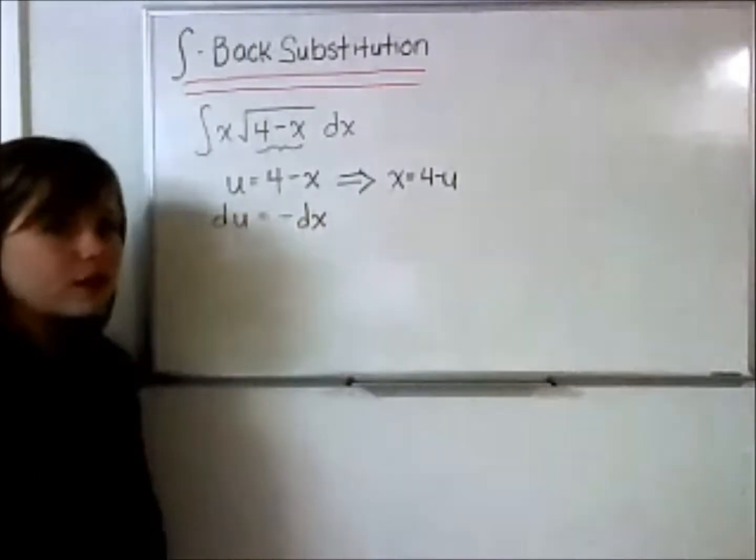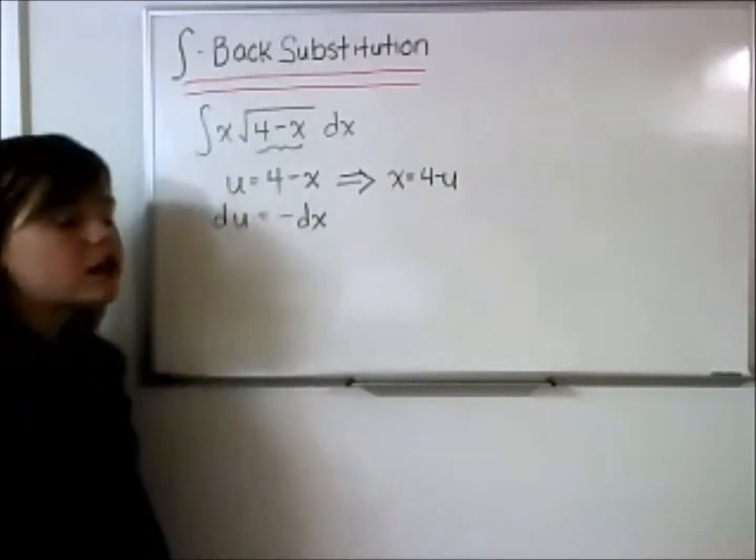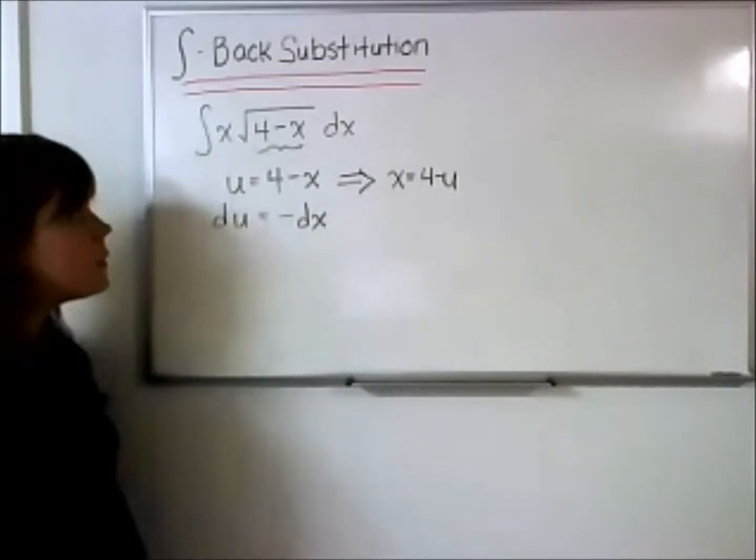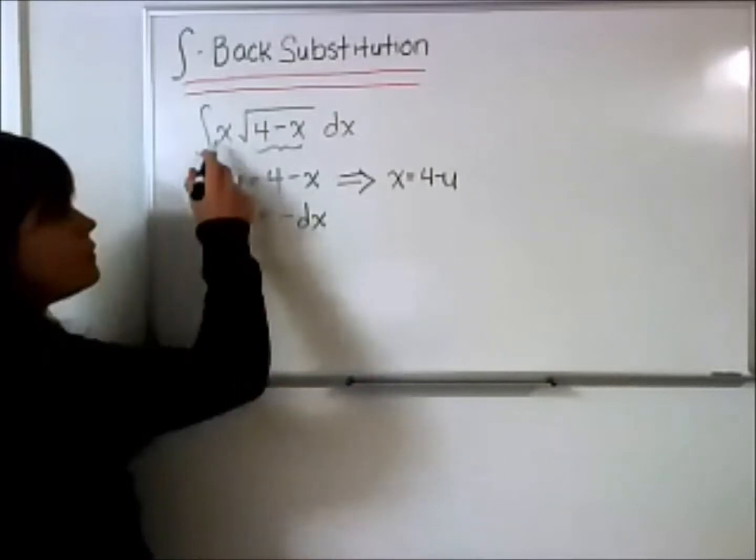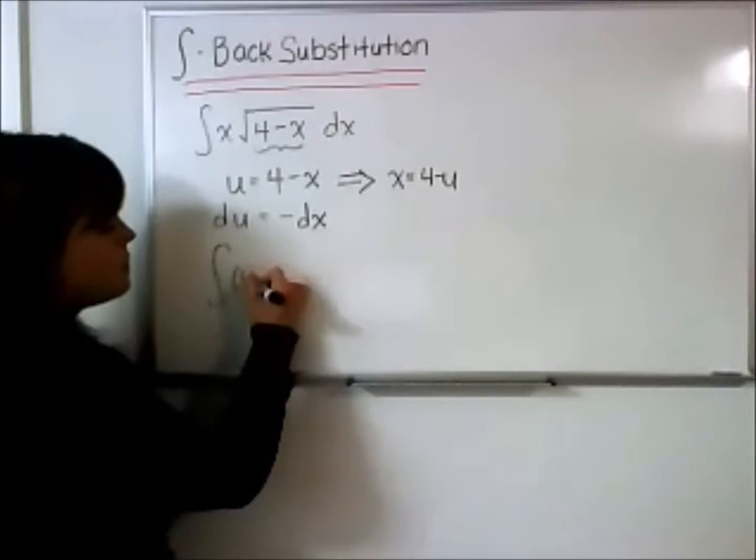So now that we have all these components, we can actually now substitute everything into our integral, and you'll see that it nicely falls into something that we can integrate. So rewriting the integral, we have x, which again we said is actually 4 minus u.